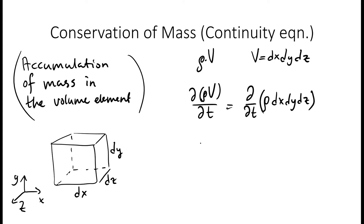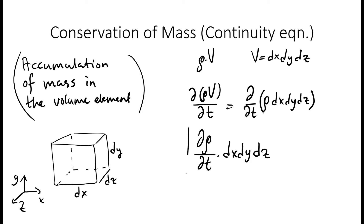So the accumulation of mass in the volume element can be written as the partial derivative of rho with respect to t, times dx dy dz. This is the accumulation of mass in the volume element.